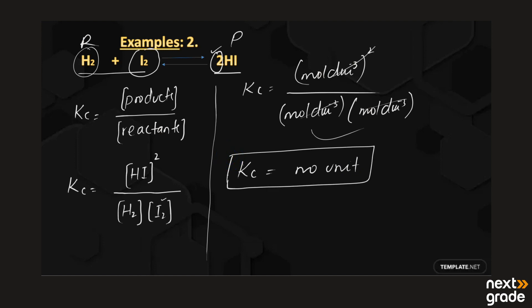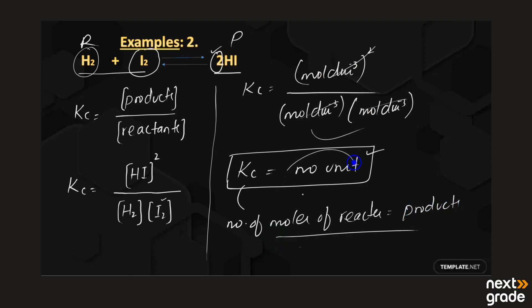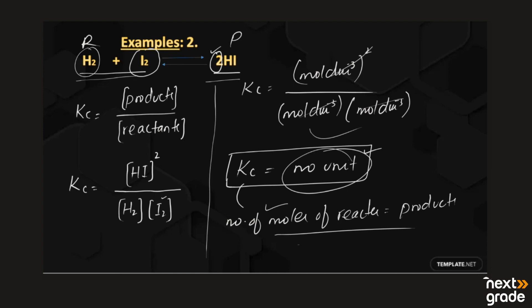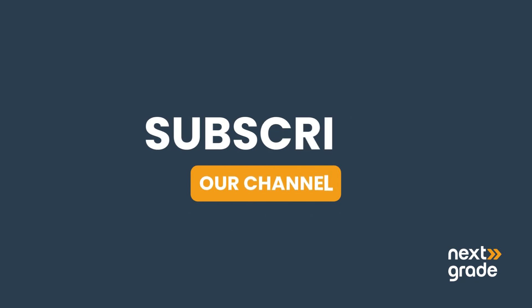In summary: some reactions have a unit for Kc, but when the number of moles of reactants equals the number of moles of products, Kc has no unit. When there is a change in the number of moles between reactant and product sides, Kc must have a unit. I hope you understand how to find the unit of Kc — if you have any questions, ask in the comment section. Have a good day!